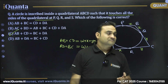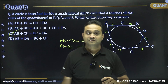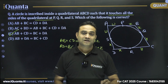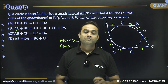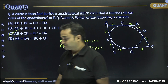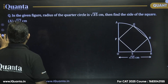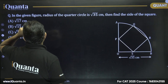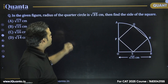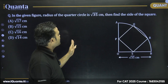So the answer is option C. Remember this concept: in any quadrilateral with an inscribed circle, the sum of each pair of opposite sides are always equal.